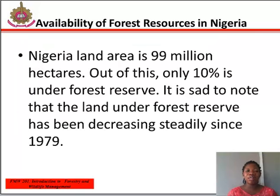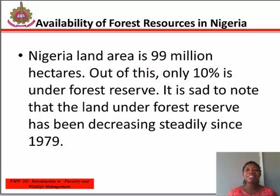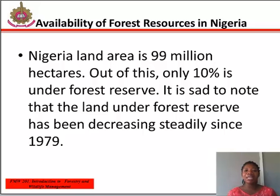Let's talk about the availability of forest resources in Nigeria. Nigeria's land area is about 99 million hectares. Out of this, only 10% is under forest reserve. It is hard to note that the land under forest reserve has been decreasing steadily since 1979. In Ondo state, about 17.36 kilometers square of forest land has been cleared for a dam project known as Tigata. While in Kogi state, about 183.89 kilometers square of forest land in Ajaokuta has been used for establishment of the steel complex.